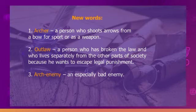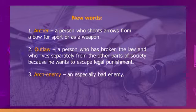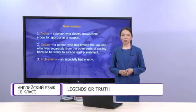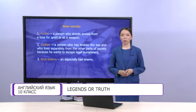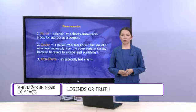And the last one: arch-enemy. An arch-enemy is an especially bad enemy. Now let's start reading. While reading, please try to find facts that prove that stories about Robin Hood are legends. You can also make notes if you need to, because after the reading we will do an exercise based on the text.